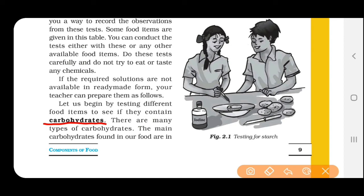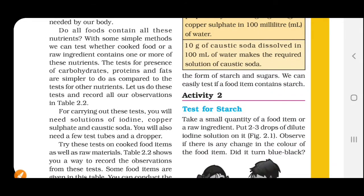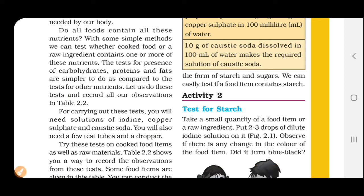Food items mein kya present hai - carbohydrate present hai ya nahi. Bahut types ke carbohydrates present hain, bahut saare types hain carbohydrates ke. But the main carbohydrates found in our food are in the form of starch and sugars. Humare food items ke andar generally jo carbohydrate hai woh starch aur sugar ke form mein paaya jaata hai. So agar aapko question puchhe ki what are the forms of carbohydrates, so likhna: sugar and starch.